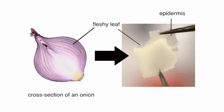Onion cells are perfect for viewing plant cells under a microscope because the onion's epidermis is one cell thick. The epidermis is a thin layer on the inside of each of the onion's fleshy leaves.